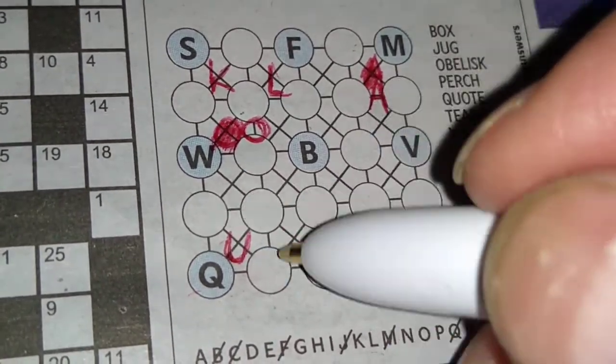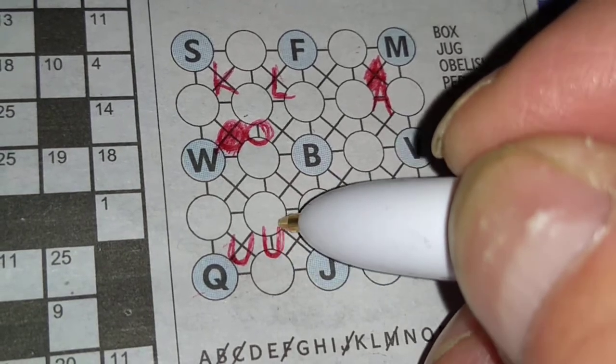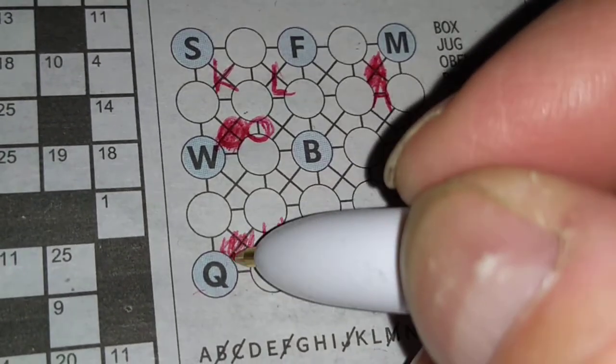Jug. Again, look, jug is one of these three, but it's got to connect to the U, so we're going to have to put it here. Just narrowing it down little by little.